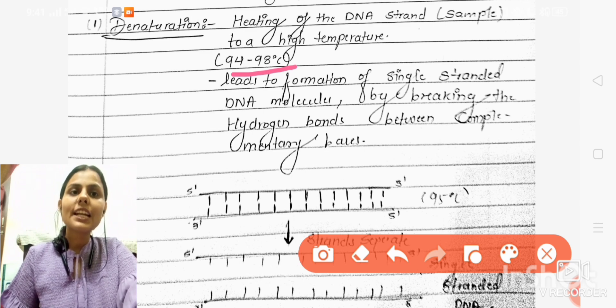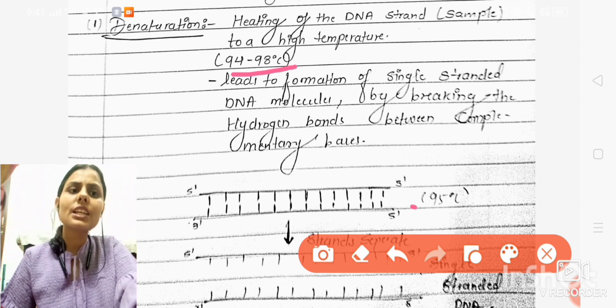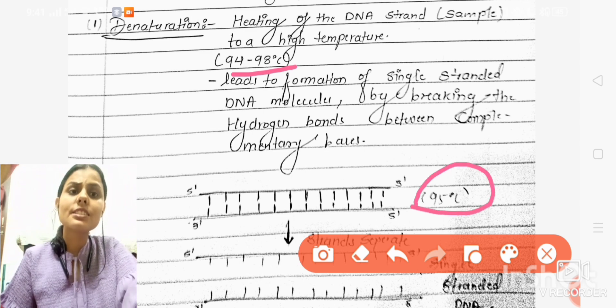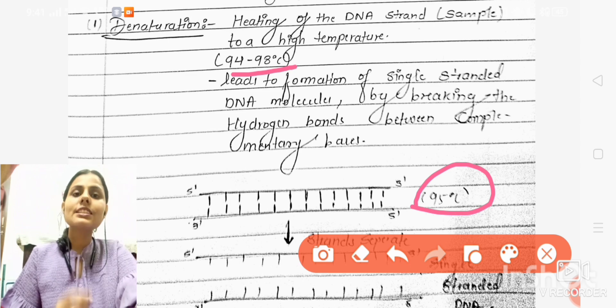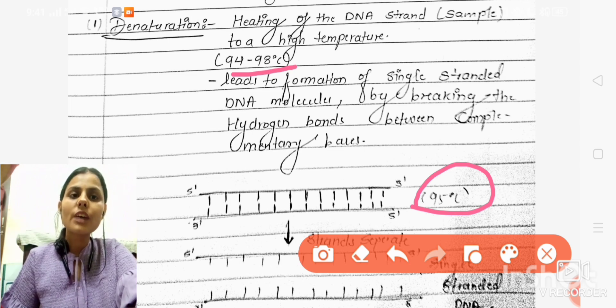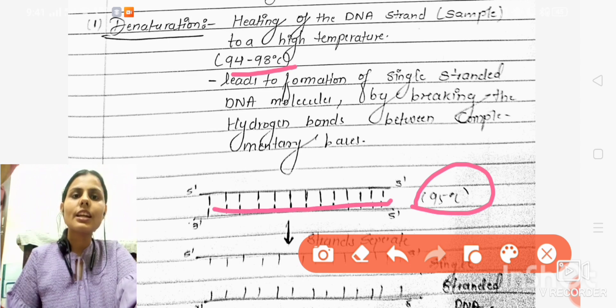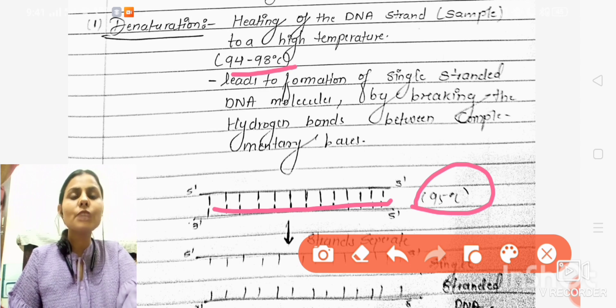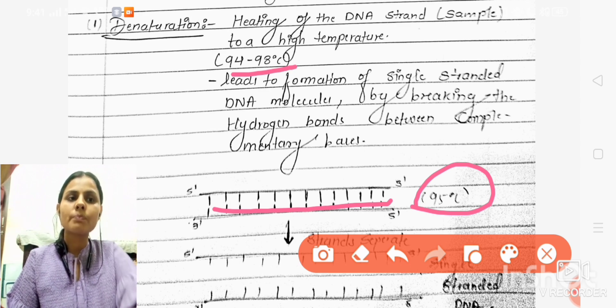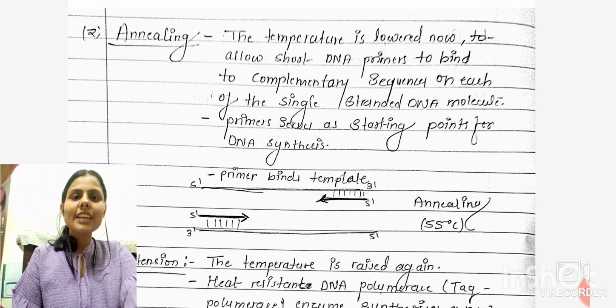The DNA strand is heated, which causes the hydrogen bonds between the strands to break, and the double-stranded DNA converts into single-stranded DNA. This was the denaturation step.